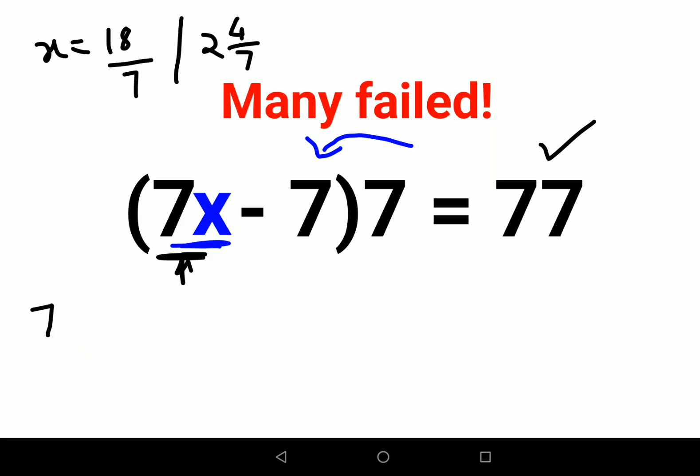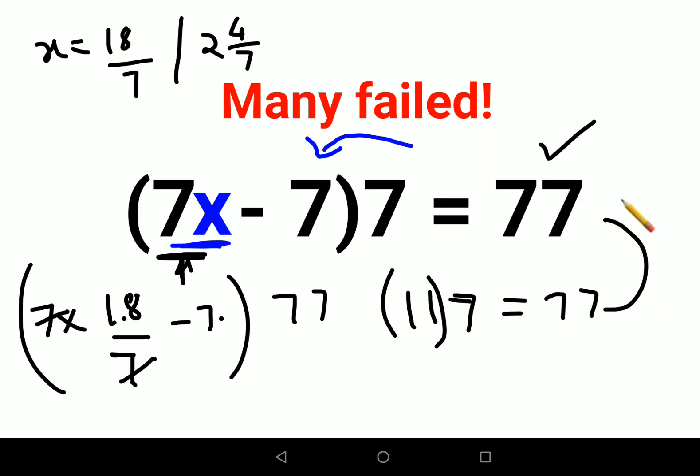We have 7 times x. Instead of taking the mixed form, we'll take the improper form. It's much easier: 18 upon 7 minus 7, into 7. Let's cancel this. 18 minus 7 gets you 11, and 11 into 7 gets you 77. That is exactly what your RHS was looking for.